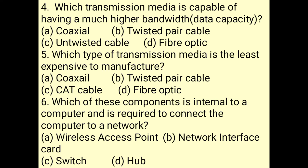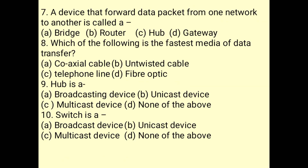Fiber optic is the transmission media capable of having a much higher bandwidth. Twisted pair cable is the least expensive transmission media to manufacture. A NIC (Network Interface Card) is the component internal to a computer that is required to connect the computer to a network. A device that forwards data packets from one network to another is called a router.